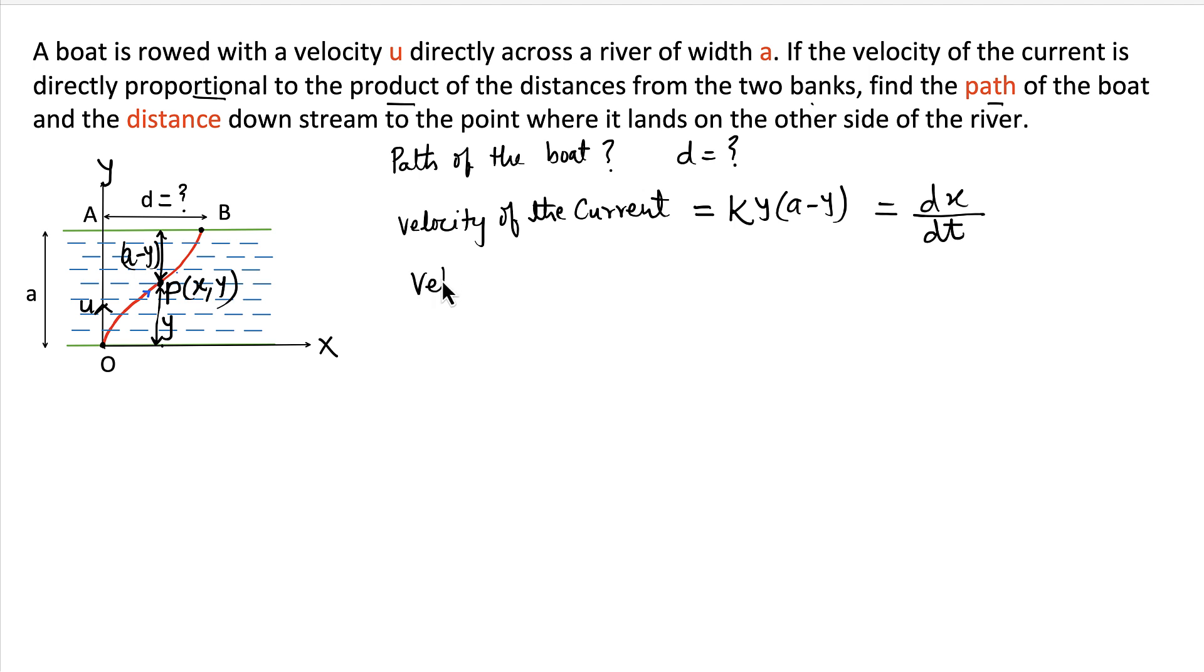And what is the velocity of the boat? It is u and it is in y direction because it is always across the river, so we can say this is dy/dt. Therefore, we can write dy/dx as dy/dt times dt/dx, and this will be u divided by Ky(a minus y).